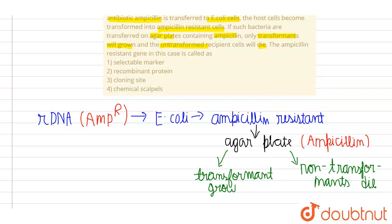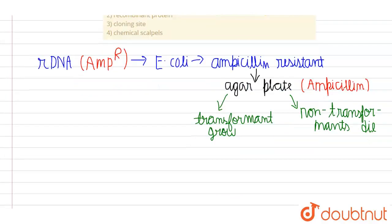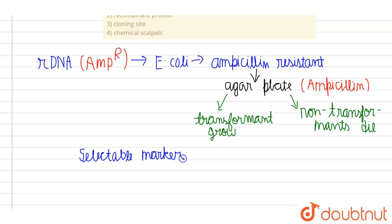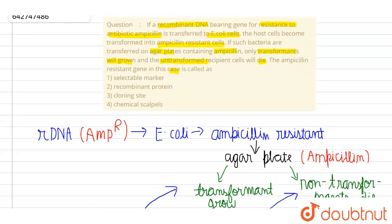The main question is: what is the ampicillin resistance gene called in such a case? The answer is that the ampicillin resistance gene here is known as a selectable marker. It is called a selectable marker because it helps to differentiate between the transformed cells — which will grow — and the non-transformant cells — which will die. That is why ampicillin resistance, or any antibiotic resistance gene for that matter, is called a selectable marker. So the answer is option one: selectable marker.